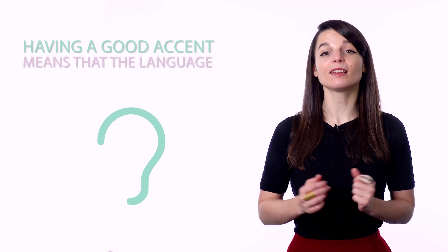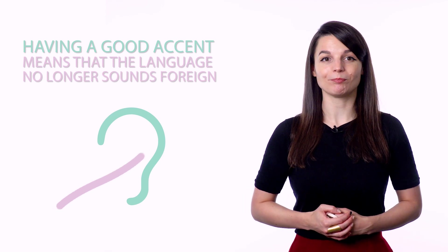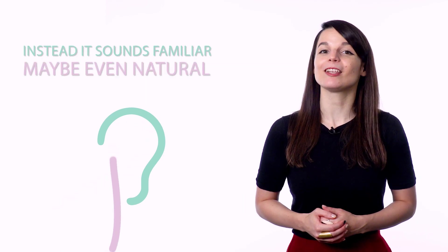Having a good accent means that the language no longer sounds foreign. Instead, it sounds familiar, maybe even natural. So how do you go about perfecting your accent? The best way is to break down the language into its individual sounds. Make note of any sounds that are the same or similar to your native language and of those that are different. Of the sounds that are different, spend your time practicing the ones that you find the hardest to say correctly. After you're comfortable with the individual sounds, you can start linking together words and phrases.